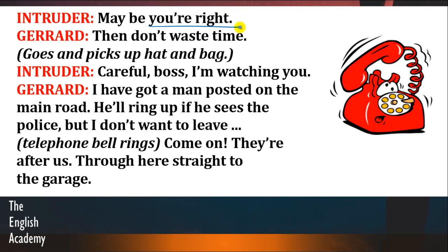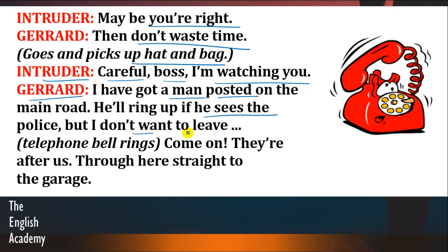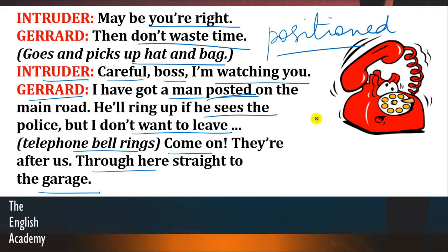Intruder says: 'Maybe you are right.' Ab intruder ko thoda thoda Gerard par vishwaas hone lagta hai. Gerard says: 'Then don't waste time.' Goes and picks up hat and bag. Intruder says: 'Careful boss, I'm watching you.' Gerard says: 'I have got a man posted on the main road. He'll ring up if he sees the police, but I don't want to leave.' Telephone bell rings. Gerard says: 'Come on, they're after us, through here straight to the garage.' Ab jab intruder ko Gerard ki baaton par vishwaas ho raha hai, Gerard usse kehta hai — chalou chalou, hume time barbaad nahi karna chahiye. Maine main road par apne ek aadmi ko khada kiya hua hai, aur jaise hi woh police ko dekhe ga, woh mujhe phone kar dega — aur tabhi phone bach padta hai.